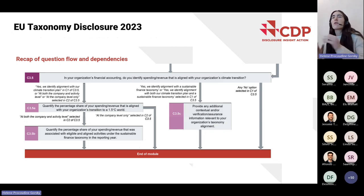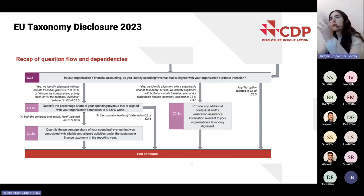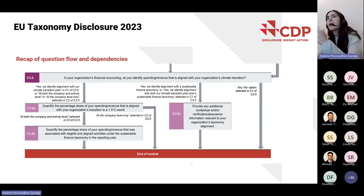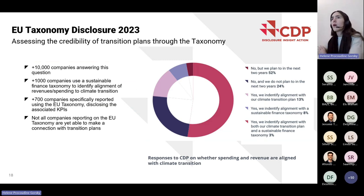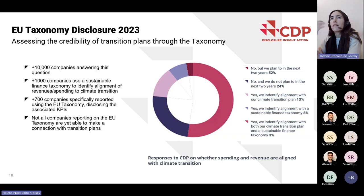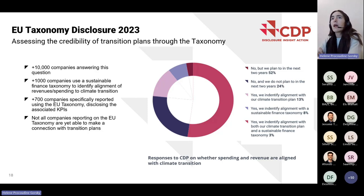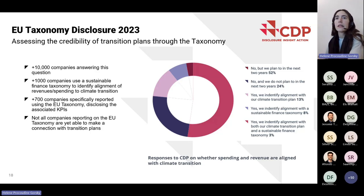Now turning to insights from new taxonomy disclosures in 2023. At CDP, we ask companies to disclose EU taxonomy KPIs in the context of transition planning — specifically, whether they identify spending and revenues aligned with their organization's climate transition. Over 10,000 companies answered this question. Over 75% said they do not identify revenues and spending in line with their climate transition. Over 1,000 companies do and use a sustainable finance taxonomy for that assessment, and around 700 specifically reported using the EU taxonomy and disclosed the associated KPIs.